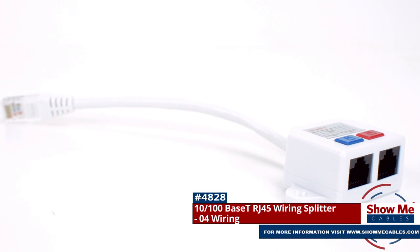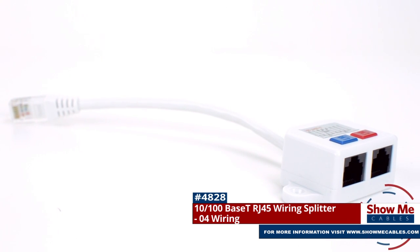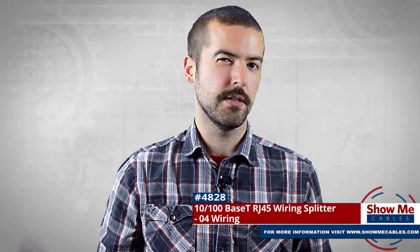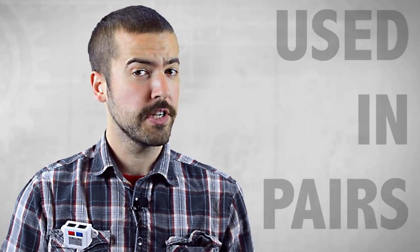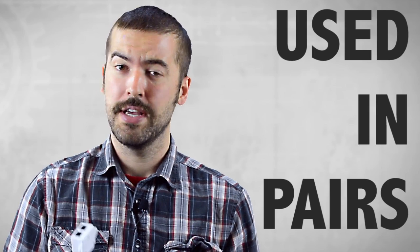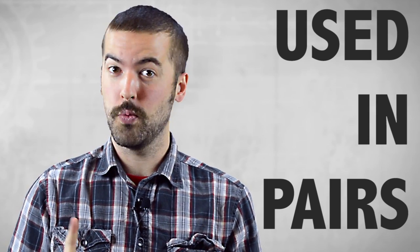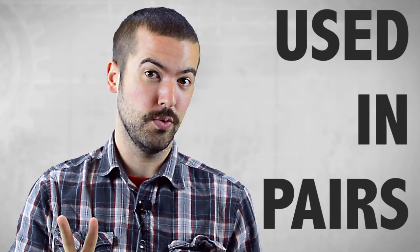This is the 10100 Base T wiring splitter with 04 wiring. Before we get into the features and applications of the splitters, I want to clear up one area that can be really confusing. The wiring splitters need to be used in pairs. They cannot be used to split one ethernet signal into two signals.